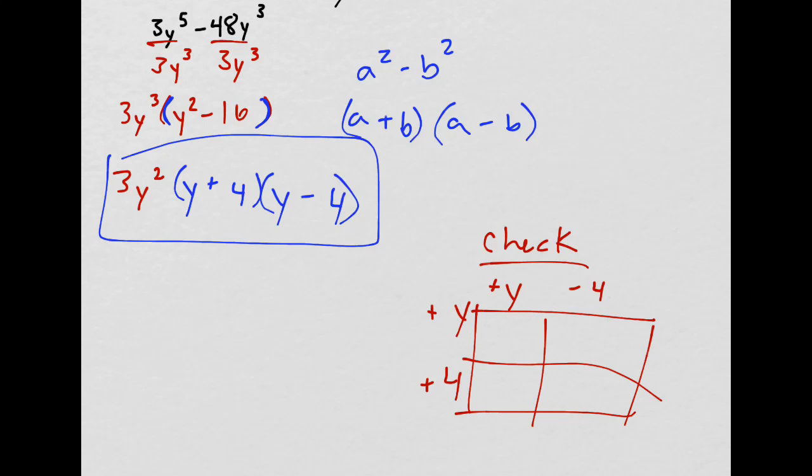Y times y gives me y squared. Y times negative 4, do you see what happens? So you have negative 4y. And then y times 4, that's 4y. And then 4 times negative 4, that's negative 16.